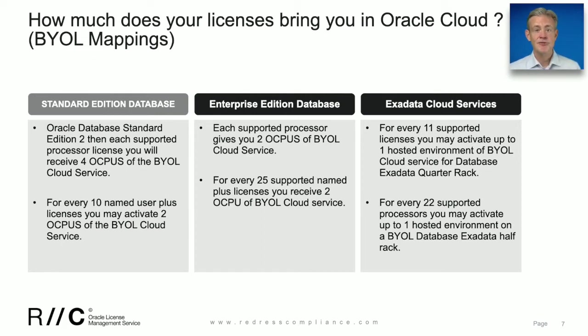If you're looking to convert Named User Plus licenses, then for every 10 NUPs, you may activate two OCPUs.